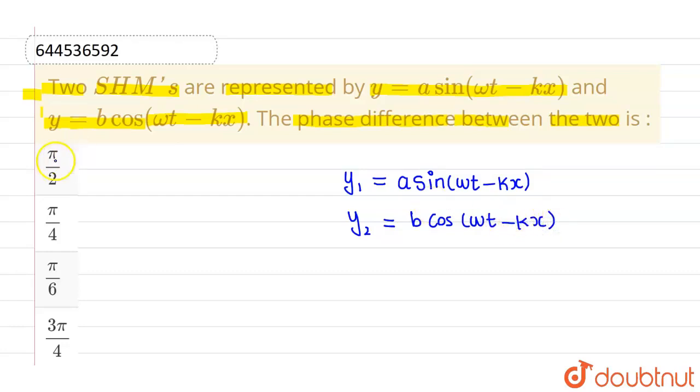Now we know that this cos theta can be written as sin pi by 2 plus theta. So by this particular formula, I can say that this y2 can be written as b sin pi by 2 plus omega t minus kx, since cos theta can be written as sin pi by 2 plus theta.